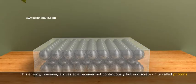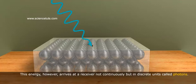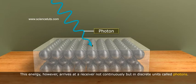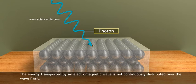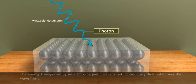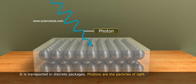This energy, however, arrives at a receiver not continuously but in discrete units called photons. The energy transported by an electromagnetic wave is not continuously distributed over the wave front. It is transported in discrete packages.